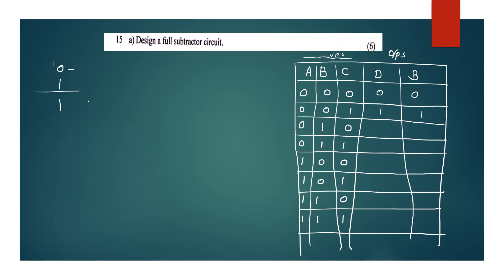The difference is 1. For 1 minus 0, the answer is 1. If we have 0 minus 1, we can borrow it. The answer is 0, 1, 1 — that's minus 1. You can borrow it.